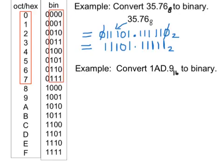Let's do this example: convert the hexadecimal 1AD.9 to binary. To do this conversion, we replace each digit in the hexadecimal number by its four-digit binary equivalent. So for one, we write 0001. For A, we look up the table — A is 1010, so we write 1010.